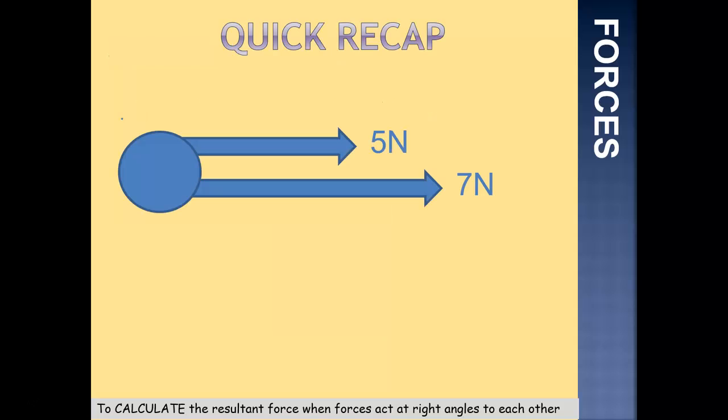So a quick recap of last lesson. We looked at resultant forces. The resultant force is the overall force that acts on an object. On the slide here, you can see we have an object with two forces acting on it: 5 newtons to the right and 7 newtons to the right. The resultant force would be a single force that has the same effect on that object. In this case, both those forces are acting in the same direction, so we simply add those forces together. That would be 5 plus 7, giving us 12 newtons.